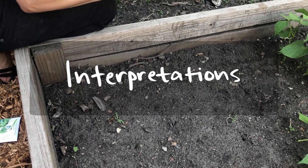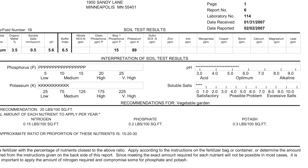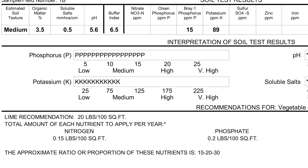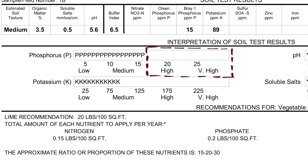Since raw numbers might not mean much by themselves, your lab report interprets them using these visual guides. For example, the phosphorus is medium, while the potassium is closer to low but still in the medium range. One of the more important ones to look at is phosphorus. If you have high or very high amounts of phosphorus in your soil, you're going to want to make sure that you don't over-apply phosphorus in the type of fertilizer you choose.